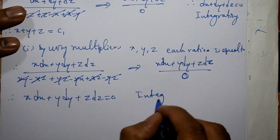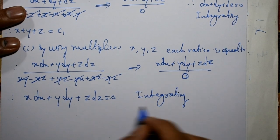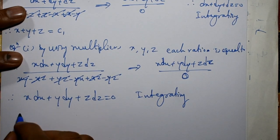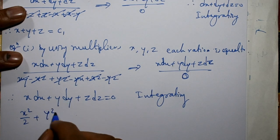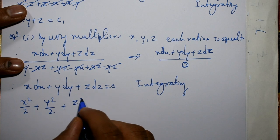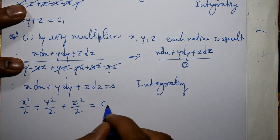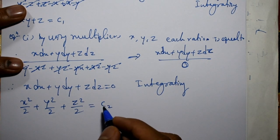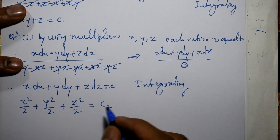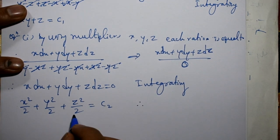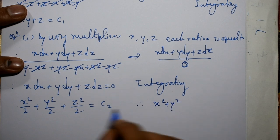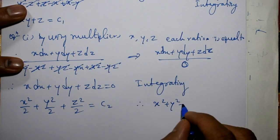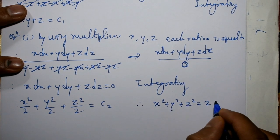Integrating: integration of x with respect to x gives x squared over 2, plus integration of y with respect to y gives y squared over 2, plus integration of z with respect to z gives z squared over 2, equal to second integral constant c2. Multiplying through by 2, we get x squared plus y squared plus z squared equal to 2c2.